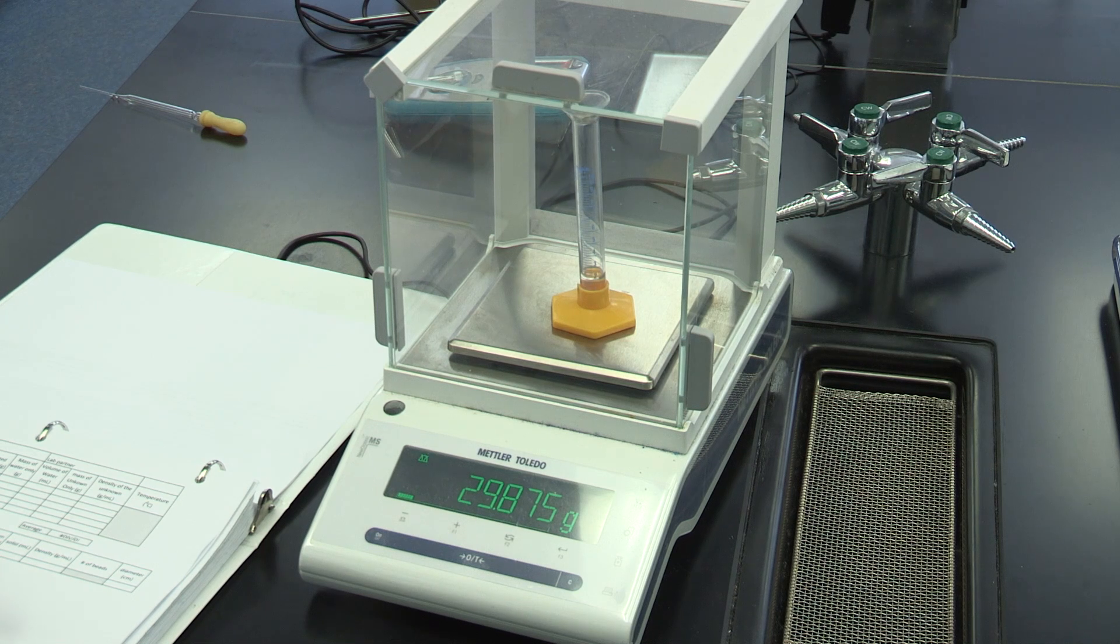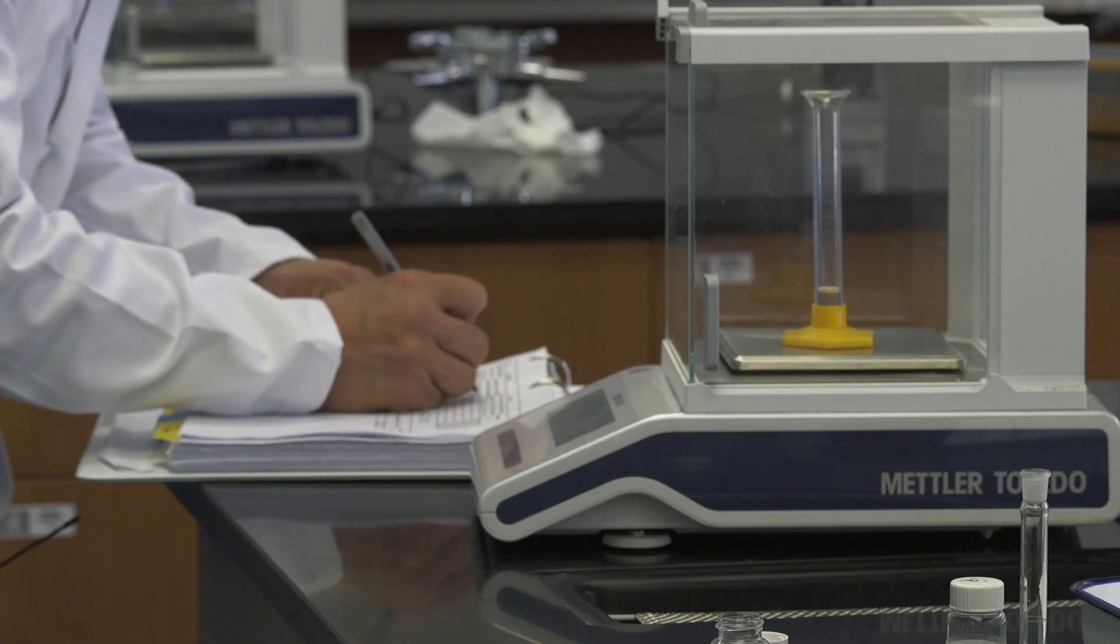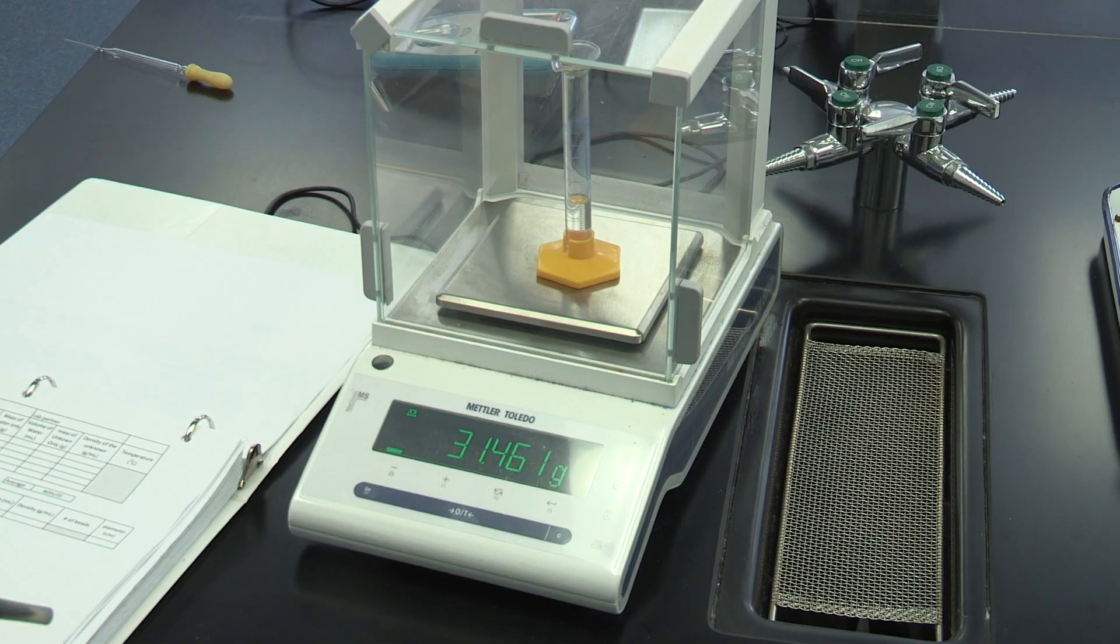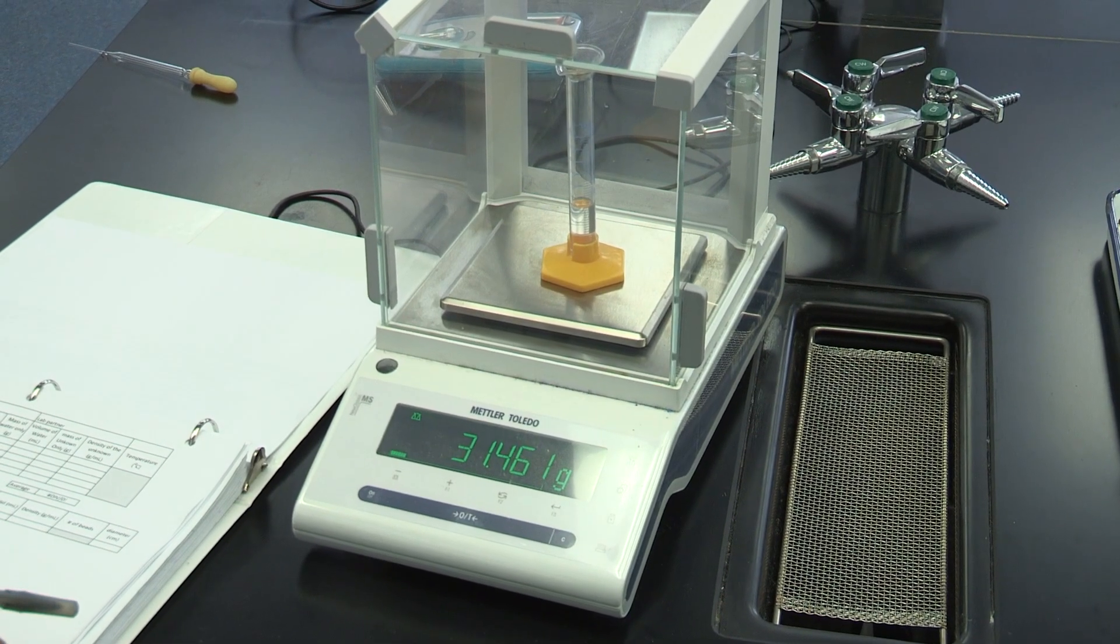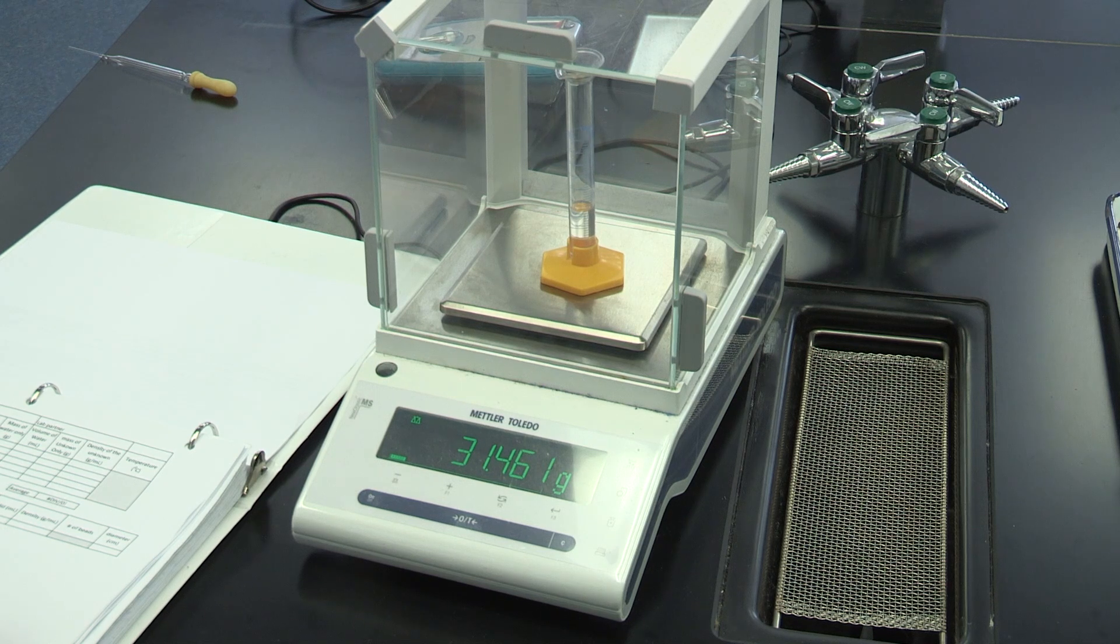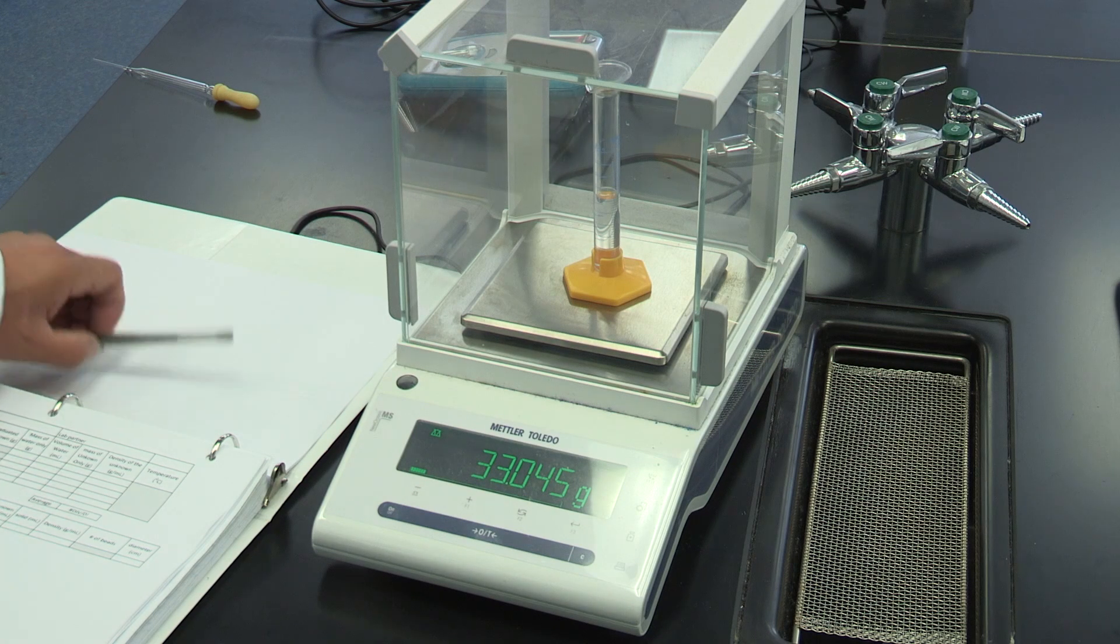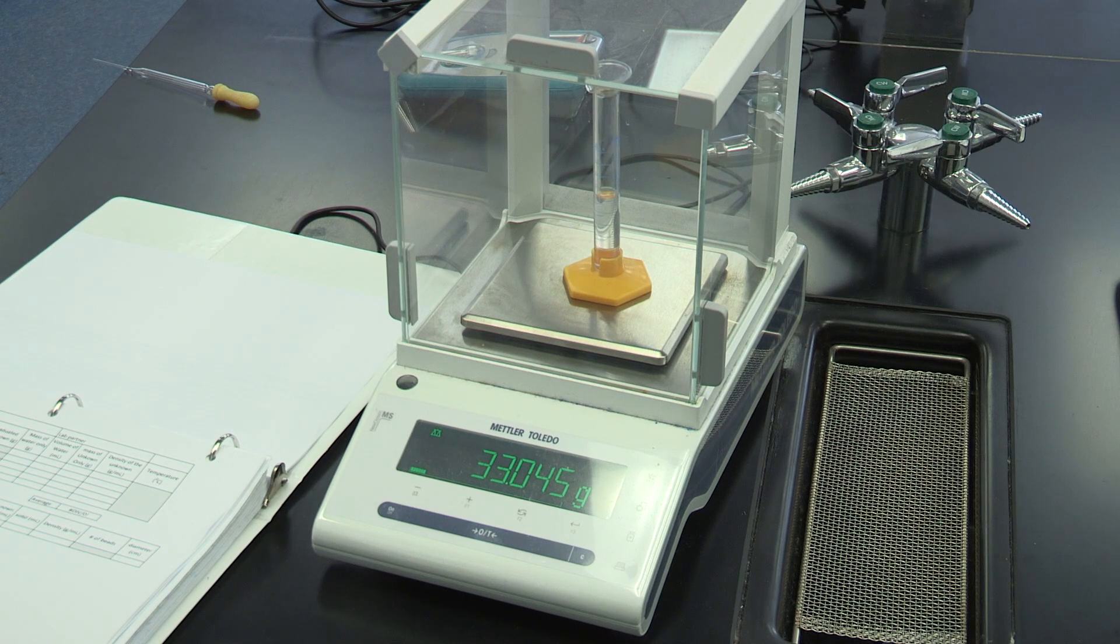With unknown liquid at 2 milliliter mark, the mass is 29.875 grams. With unknown liquid at 6 milliliter mark, the mass is 33.045 grams.